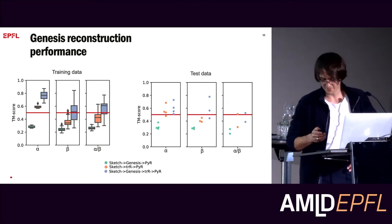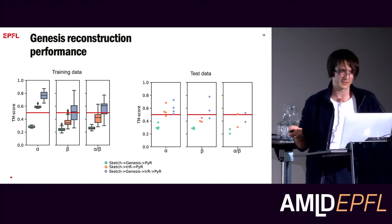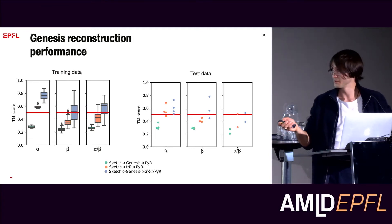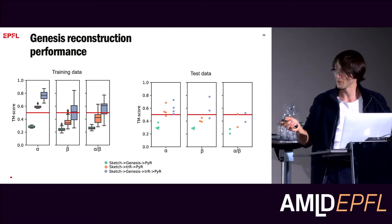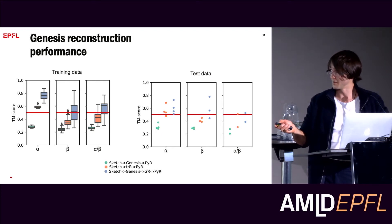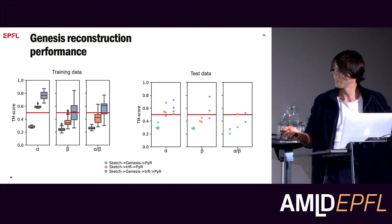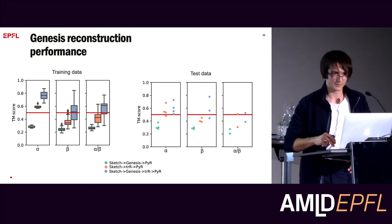We did some ablation studies. If you just use Genesis and try with an energy minimization method to recover the structure, it doesn't really work for alpha, beta, and mixed alpha-beta proteins. If you simply input the sketch to the TR Rosetta design pipeline, it works for alpha helices because they're very structured, but it doesn't work for beta and mixed alpha-beta proteins. Using the full pipeline — first denoising the pair features then designing the sequences — you get a boost in recovering the structures.